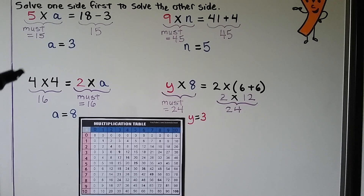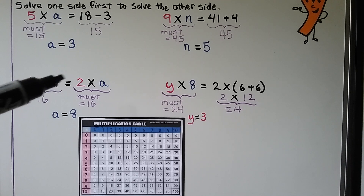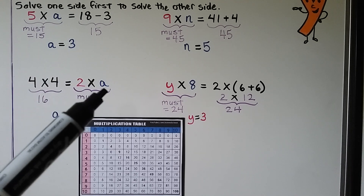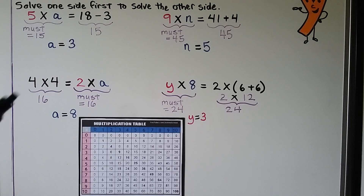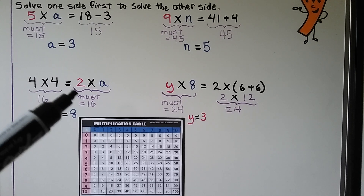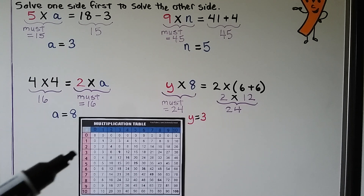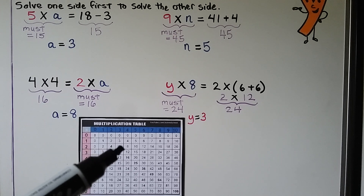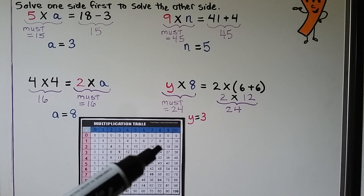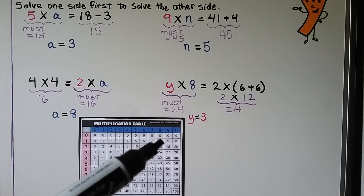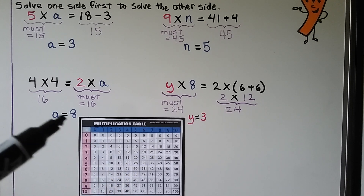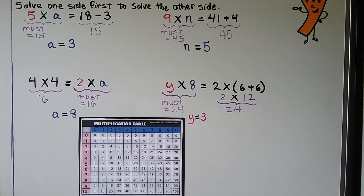Next: 4 times 4 is equal to 2 times a. We need to find what a is. 4 times 4 equals 16, so this side must be equal to 16. Going across the row for 2 to the 16, then up the column, we see it's an 8. So a is equal to 8, and that makes the equation true.